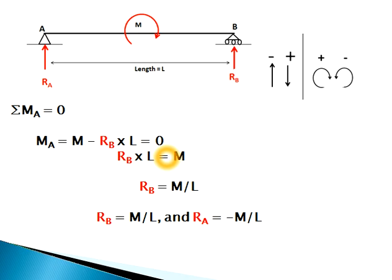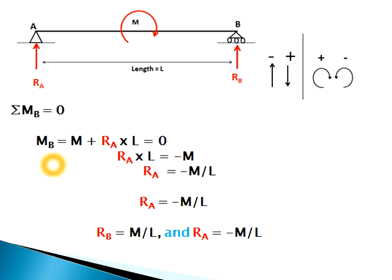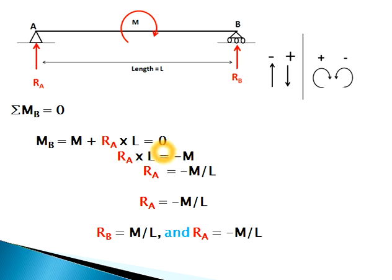Substituting Rb into the first equation gives Ra = −M/L. We can confirm this by taking moment at B: both M and Ra·L act in a clockwise direction, giving M plus Ra·L = 0, confirming Ra = −M/L.